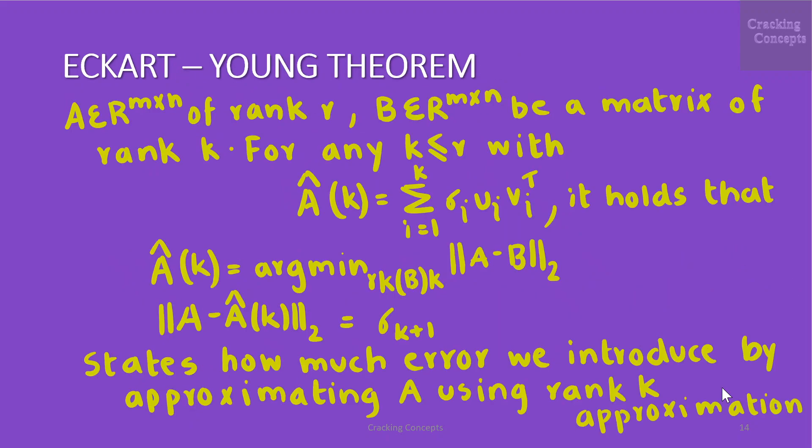Then we look into Eckart-Young theorem. Consider a matrix A element of m × n dimension space of rank R and a matrix B belonging to the same space with a rank K. For any K less than or equal to R with Â_k given by Σ_{i=1}^{k} σ_i u_i v_i^T, it holds that Â_k can be given by the minimum of ||A-B|| Euclidean norm where rank of B is less than or equal to K and the Euclidean norm of A - Â_k is σ_{k+1}.